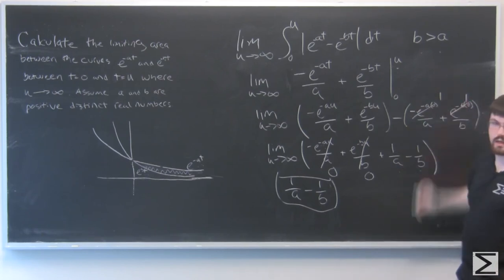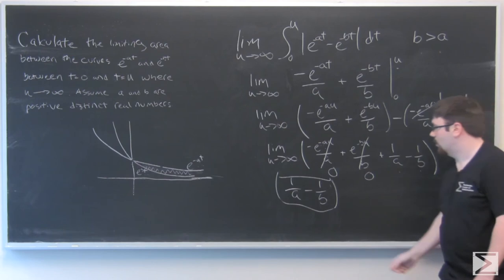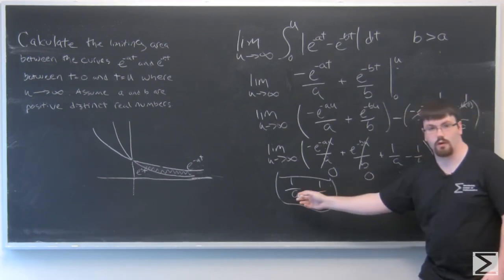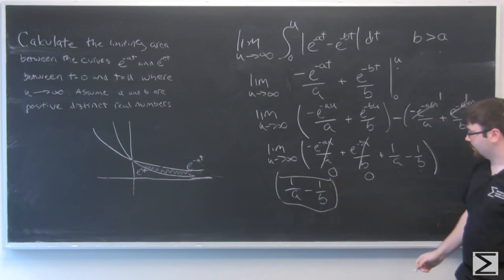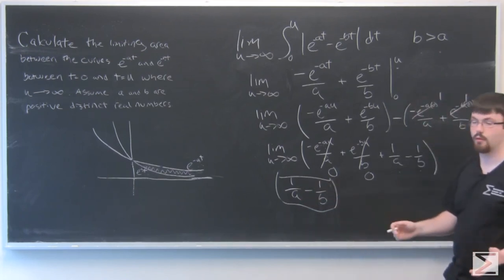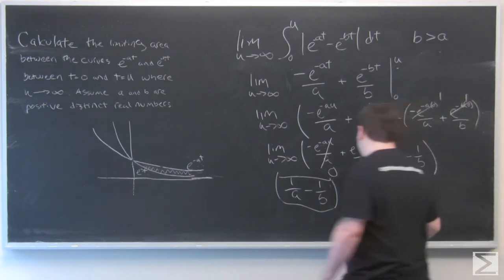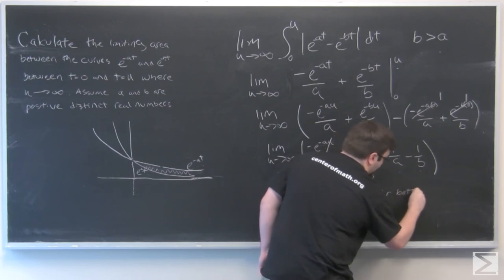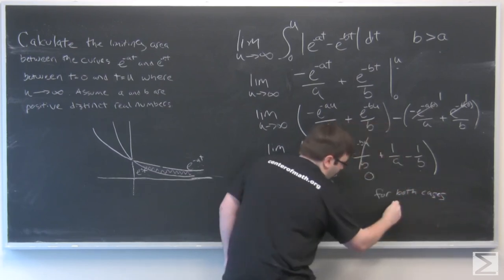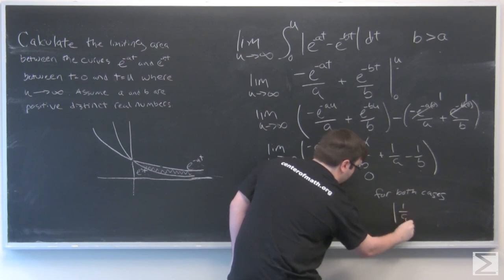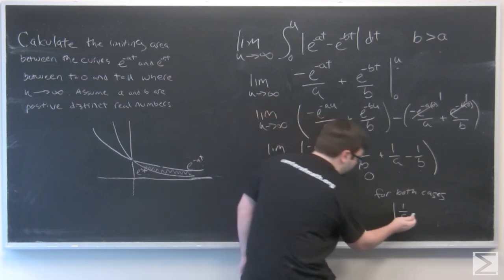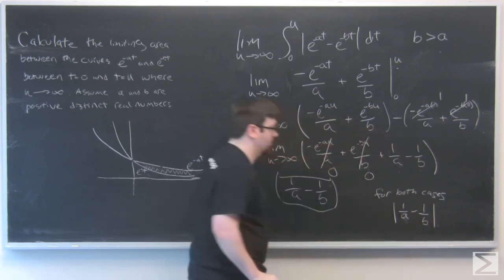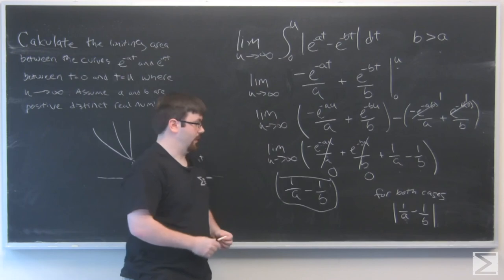Now we can do the case where a is greater than b, but we're going to wind up with this just reversed, the negative of it. So what we can do as a way to simplify both cases is we can just add absolute value since the other case would have just given us the negative. So to summarize for both cases, we can just write it with an absolute value sign to take the magnitude of the area that we're looking for.